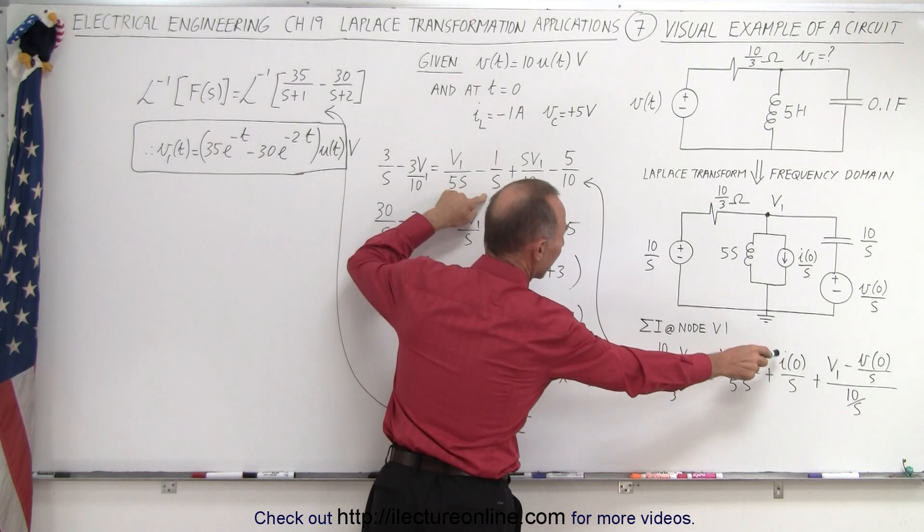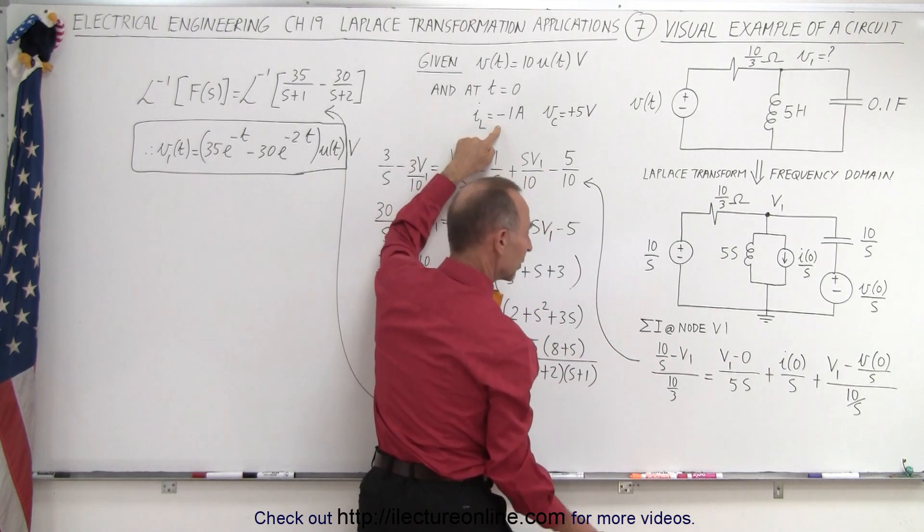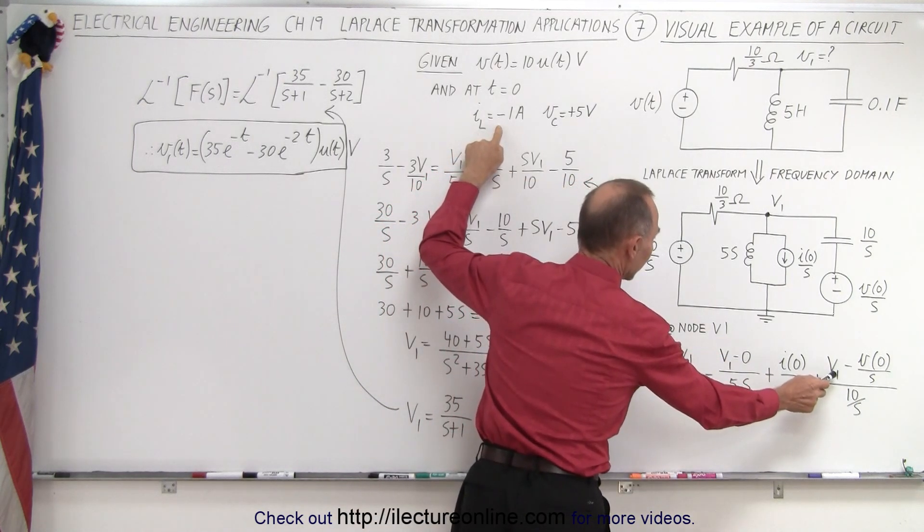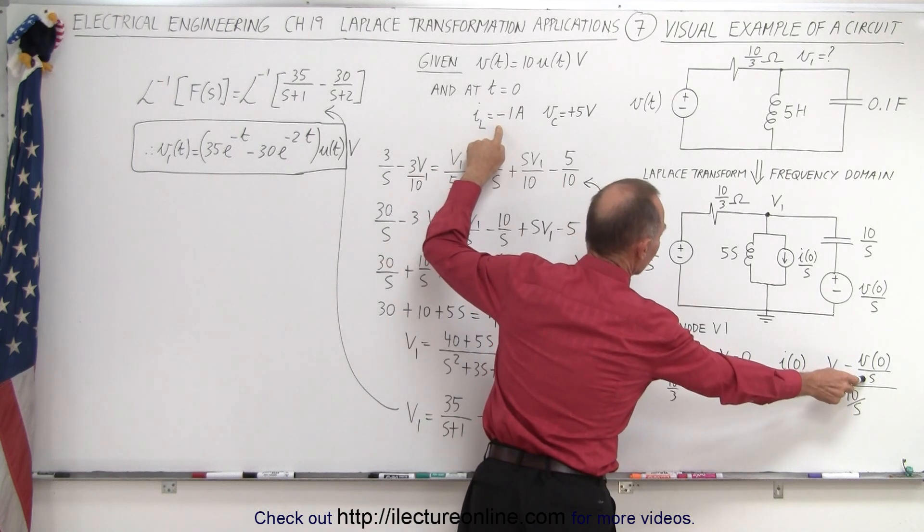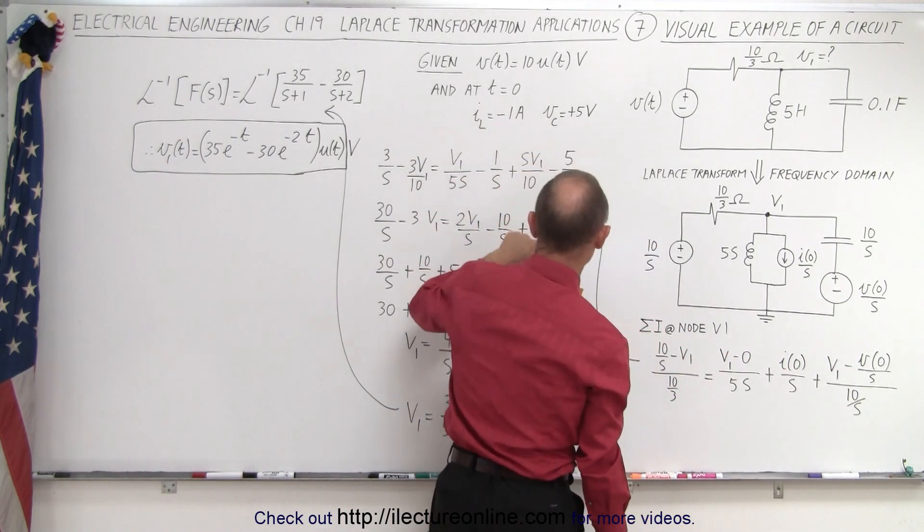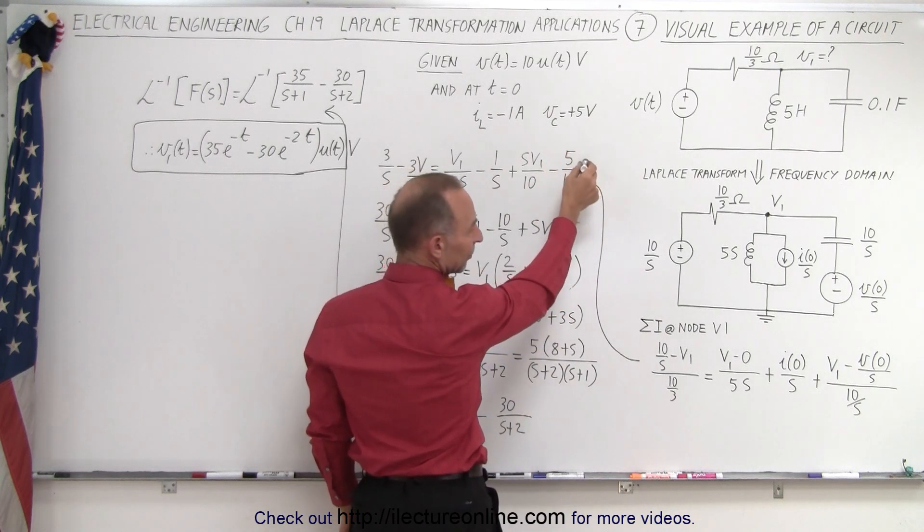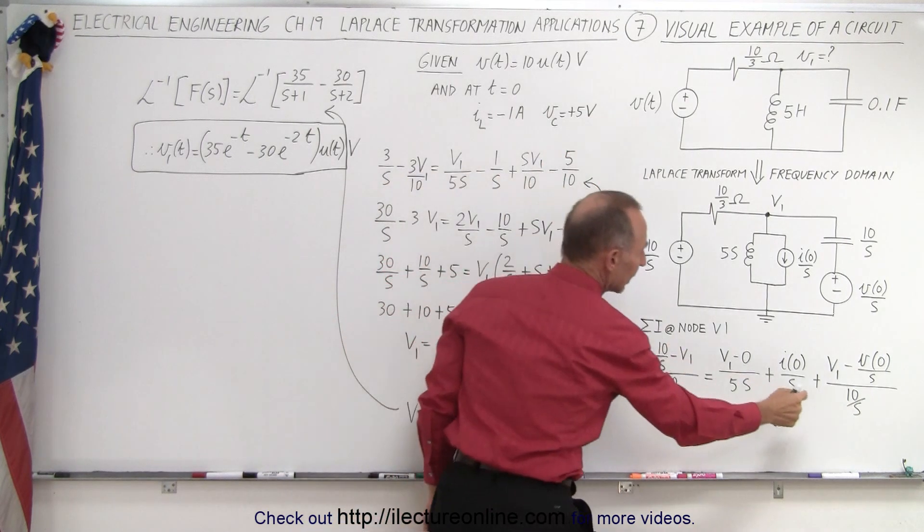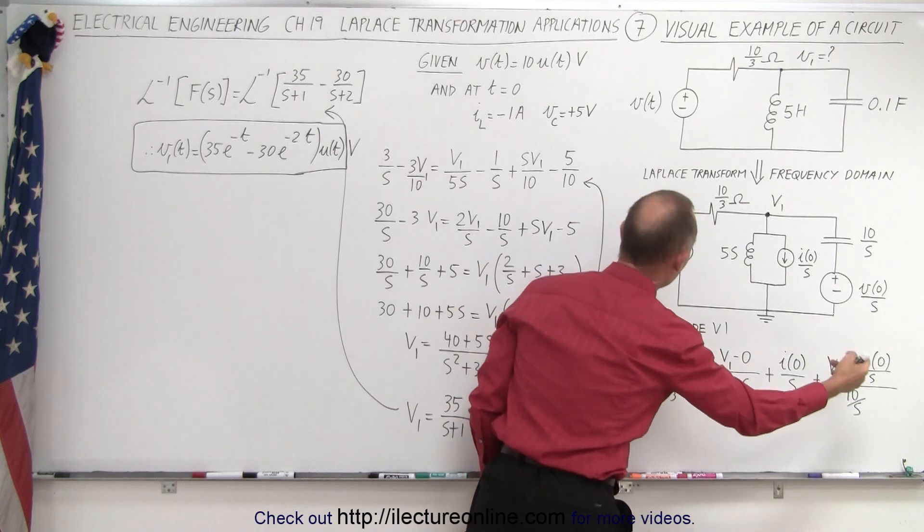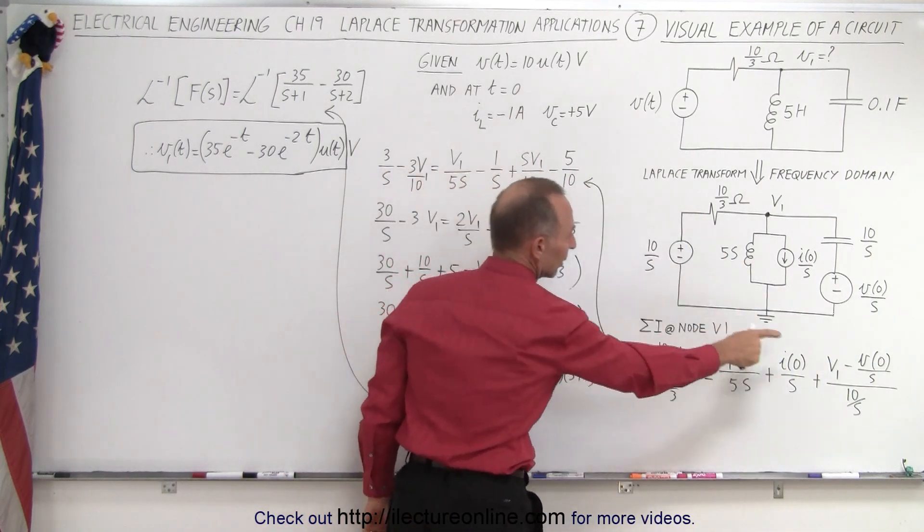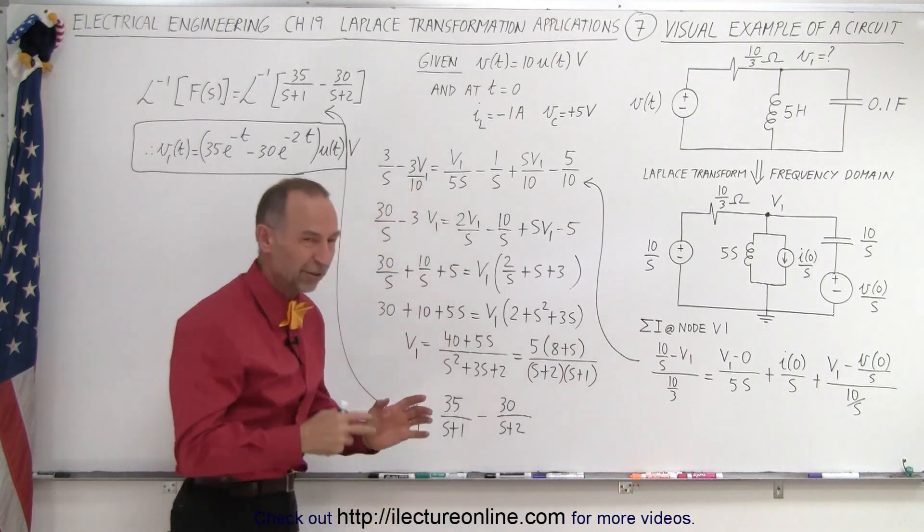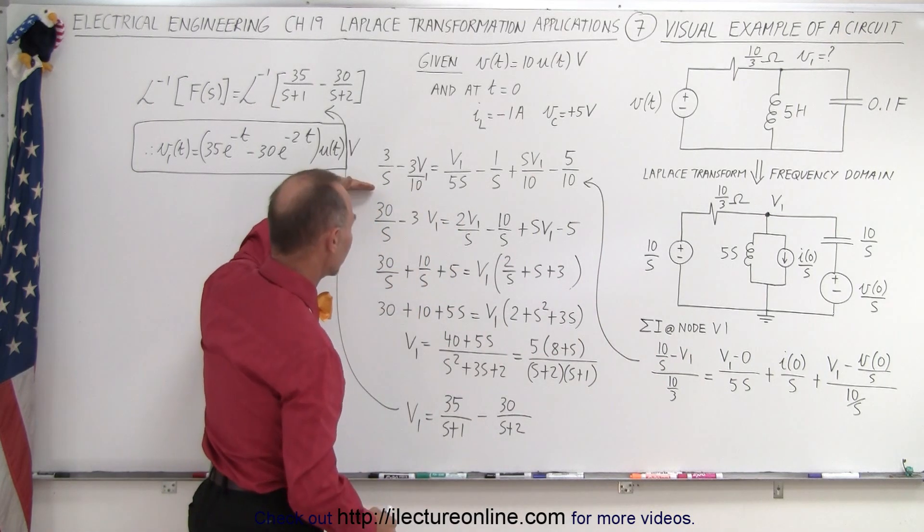minus negative 1/S, because that's the current at time equals 0. Here we have V1 minus the voltage across the capacitor at time equals 0, so V1 minus 5. We divide that by 10/S, which is the same as multiplying by S/10. That's where this S comes from, and why this S in the denominator disappears. You can see algebraically how we get to this equation.